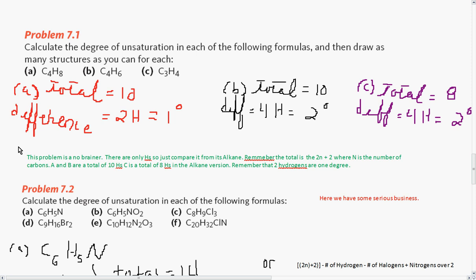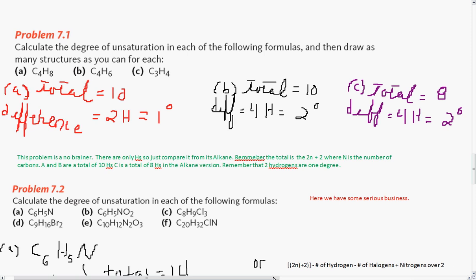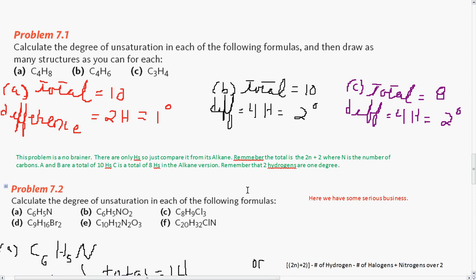In B, same thing. You have a total of 10. And this problem is really a no-brainer. There are only Hs, so you can just compare each one to its alkane. And remember that the total is 2N plus 2, where N is the number of carbons. So A and B are a total of 10, Hs is a total of 8 in the alkane version. Remember that 2 hydrogens are 1 degree, and there is how to do them for A, B, and C.